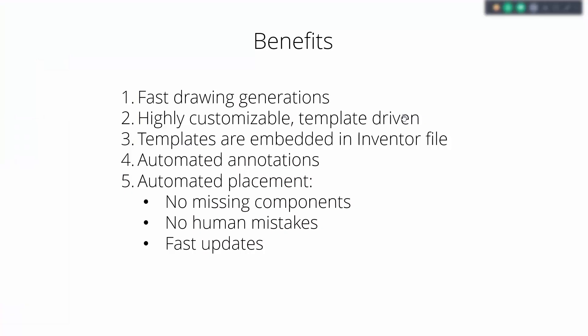Now let's speak about the benefits you get using the Woodwork for Inventor drawing generator. First of all, drawings are generated very quickly — there's no need to spend a lot of time on them and you can focus on developing your model more precisely. Those drawings can be highly customizable because they are driven by a template, so if there is a need to change something, you change the template and the changes are reflected in the drawings. Templates are embedded in the Inventor file, meaning there's no need for additional files elsewhere — one single file contains all the data. Annotations are placed automatically without user interruption, so grain direction, edge banding, and other annotations are placed automatically.